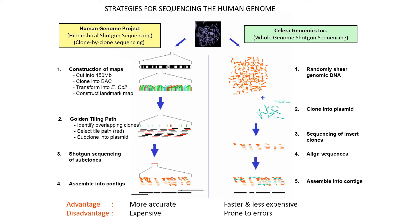Which method is better depends on the size and complexity of the genome; with the human genome, each group believed its approach to be superior. It is worth mentioning that Celera had access to the publicly funded Human Genome Consortium data, but the consortium did not have access to Celera's data. Indeed, without the golden tiling path released by the Human Genome Consortium, the whole genome shotgun method would not have been able to determine where sequenced DNA fragments belong. An idealized hybrid strategy evolved towards the end of the project, in which the consortium selected more clones and Celera made use of the BAC maps, allowing both organizations to reach their goals in less than the expected time frame.